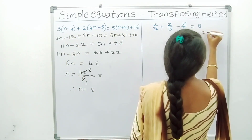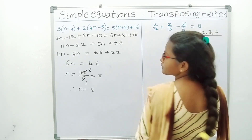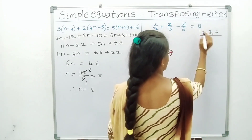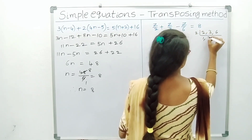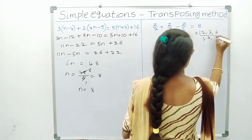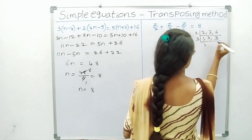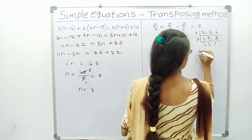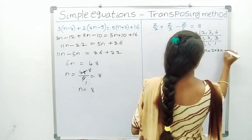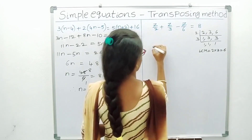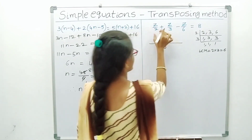See here: 2, 3, 6. Two numbers are even numbers, so we do the 2 times table. 2 into 2 is 4, 2 into 1 is 2, 2 into 3 is 6. Then 3 times table: 3 into 1 is 3. So LCM is equal to 2 into 3, which is equal to 6. The LCM is 6.